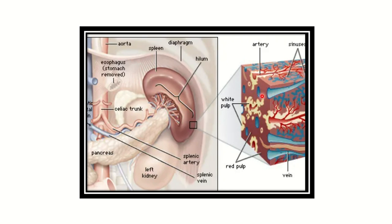Histologically, the spleen is divided into the white pulp and the red pulp. The white pulp is related to the defense of the body, while the red pulp is related to blood circulation. Within the spleen, different types of veins and arteries are also present.